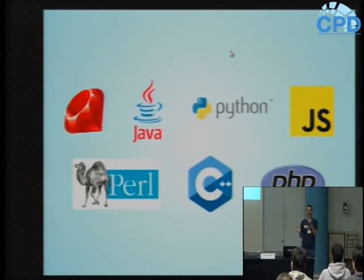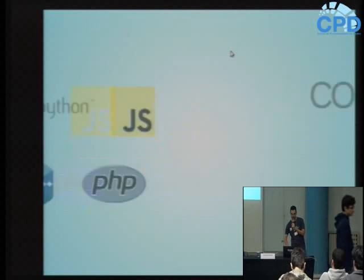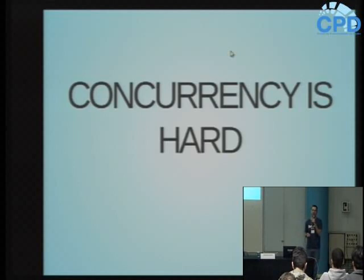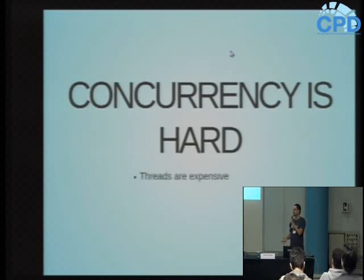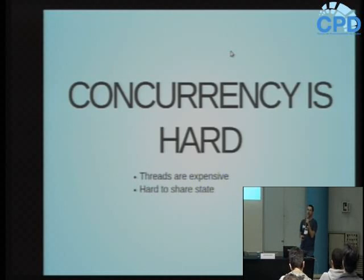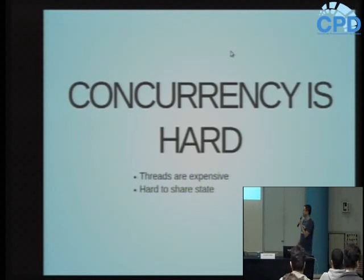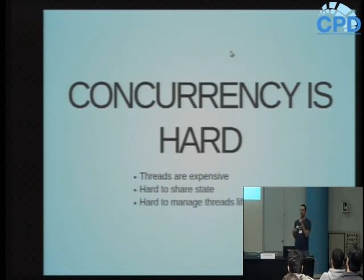O importante é que, apesar de serem linguagens diferentes, têm suas semelhanças e diferenças, mas tem um detalhe que é comum em todas essas linguagens: a concorrência é difícil, é um tema avançado. Em qualquer linguagem, quando você começa a aprender o básico, ninguém fala de concorrência, de paralelismo. Isso é um assunto avançado, considerado complexo. Por que é complexo? Primeiro, threads são caras computacionalmente. É difícil compartilhar estados entre threads. E gerenciar o ciclo de vida das threads também é difícil - saber quando uma thread começou, quantas estão executando, quando terminou ou forçá-las a parar.